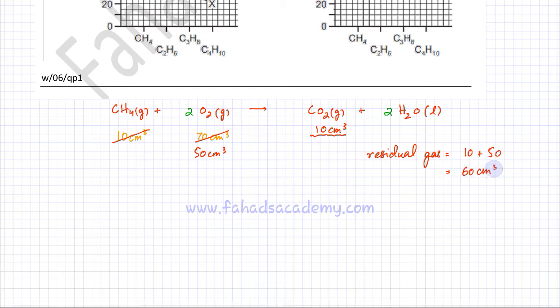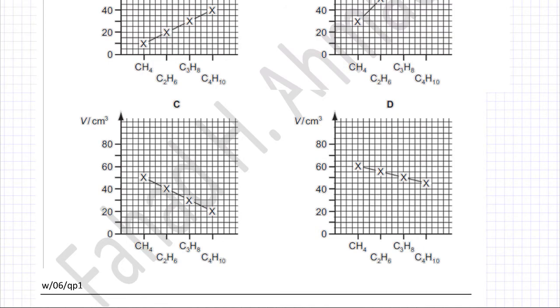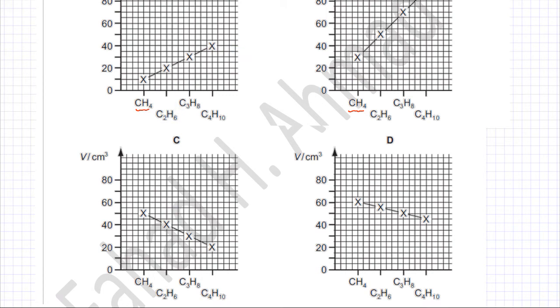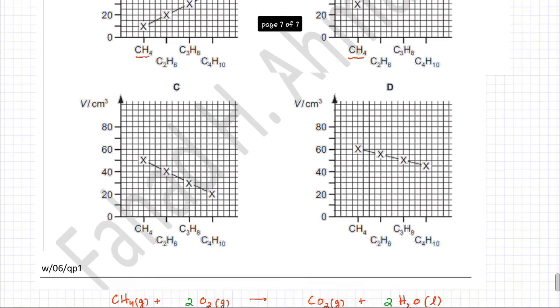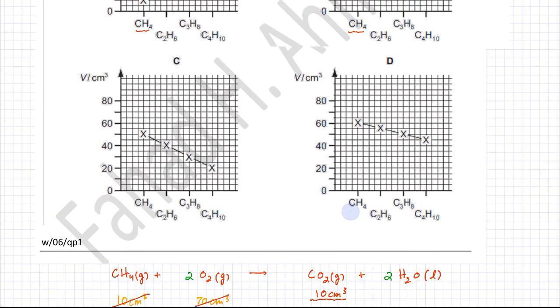Looking at the graphs for methane, some options clearly don't show 60 cm³ of residual gas. There is only one option where the amount of residual gas after burning 10 cm³ of methane with 70 cm³ of O2 is 60 cm³. That makes option D the correct answer, but we will confirm by checking C2H6.